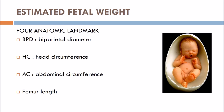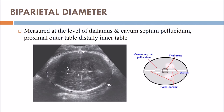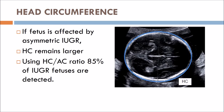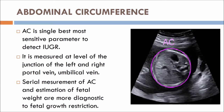For estimated fetal weight, four anatomic landmarks are used: biparietal diameter, head circumference, abdominal circumference, and femur length. The biparietal diameter is measured at the level of the thalamus and cavum septum pellucidum, from the proximal outer table to the distal inner table. If the fetus is affected by asymmetric IUGR, head circumference remains larger. Using the head circumference to abdominal circumference ratio, 85% of IUGR fetuses are detected. Abdominal circumference is the single best and most sensitive parameter to detect IUGR; it is measured at the level of the junction of the left and right portal vein. Serial measurement of abdominal circumference and estimation of fetal weight are most diagnostic for fetal growth restriction.